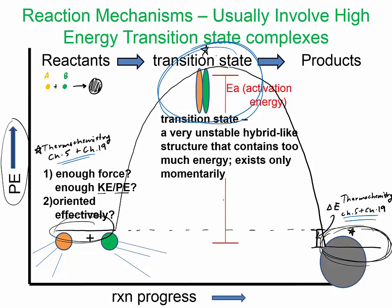The lower this hump is, the more reacting molecules can get over it and create product. It's kind of like hitting 500 golf balls up a hill — if you lower the hill, more golf balls can get over it, whereas with a really high hill, only a few can get over in a given time. This whole area is the area of kinetics, which in our current Brown LeMay textbook is chapter 14.